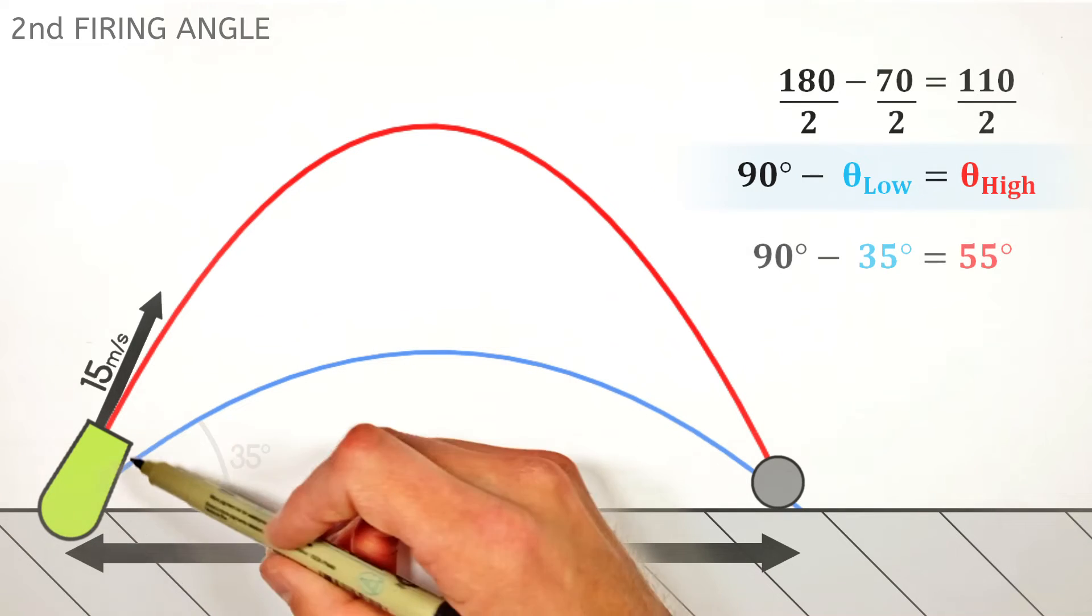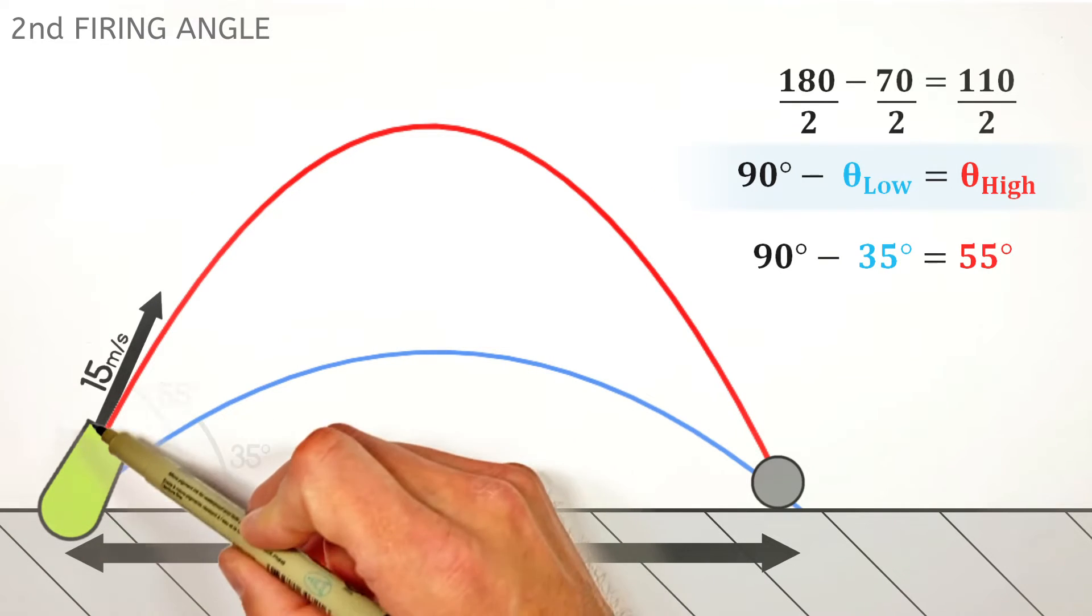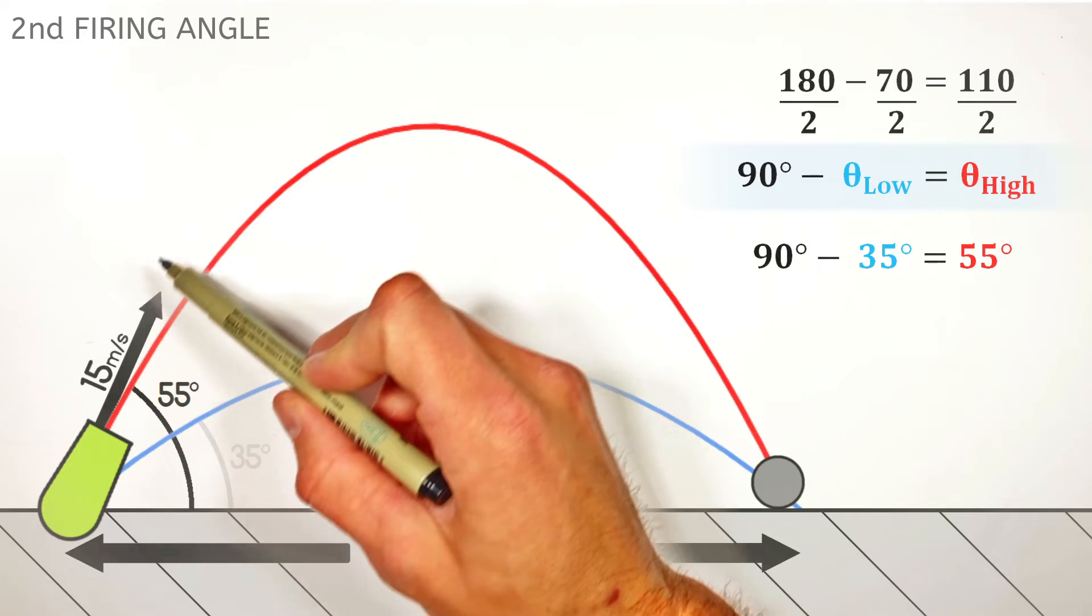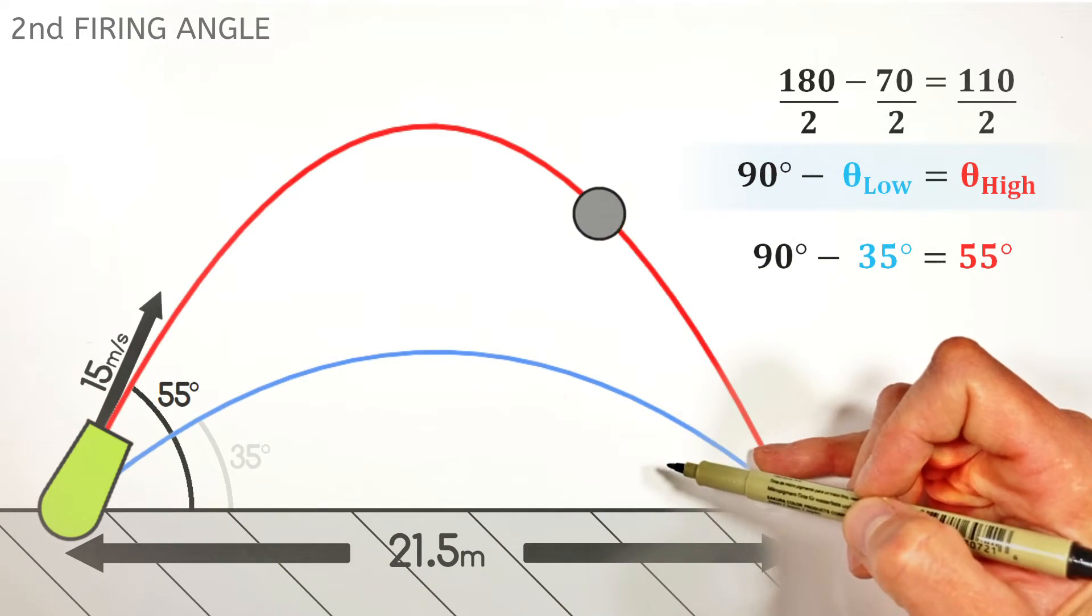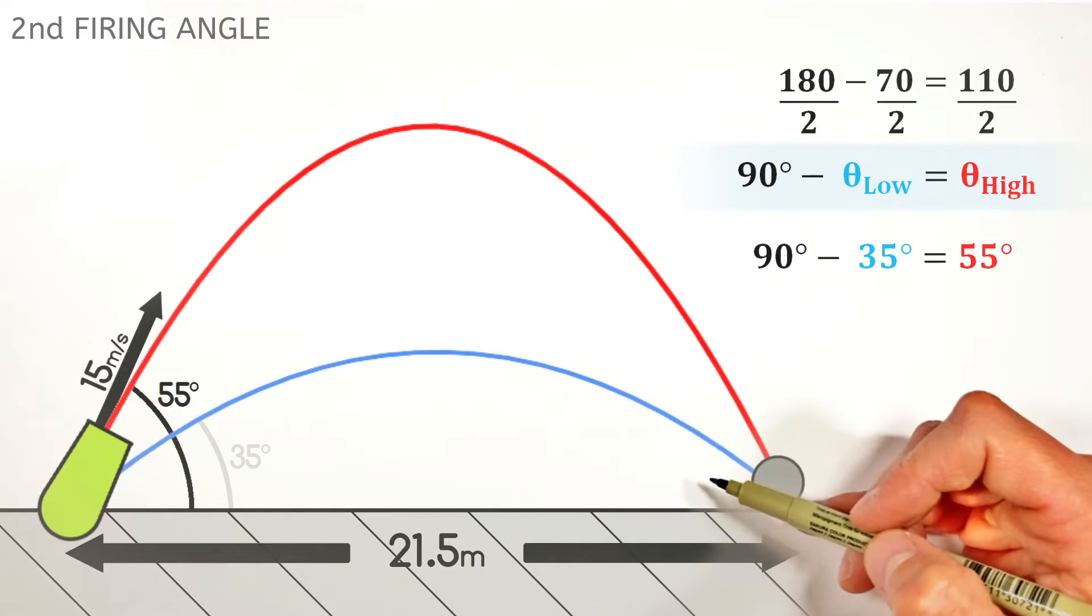So going back to our cannon, if we were to shoot the cannonball at 55 degrees, it would go farther up in the air and then land, but it's still going to have the same range of 21.5 meters.